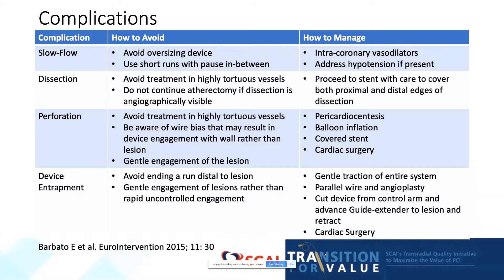Similar to dissection, perforation tends to occur when treating highly tortuous vessels and may occur when wire bias results in device engagement with the wall rather than the lesion. It's important to gently engage the lesion to avoid perforation. Should perforation occur, one must be prepared to perform balloon tamponade, pericardiocentesis, and the placement of a covered stent. In rare circumstances, cardiac surgery is necessary.